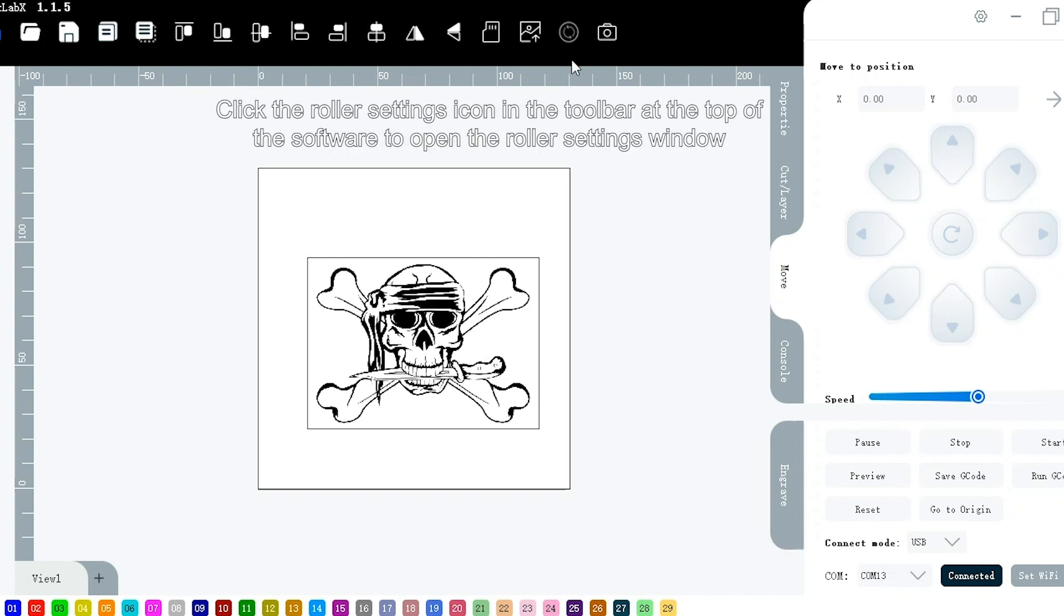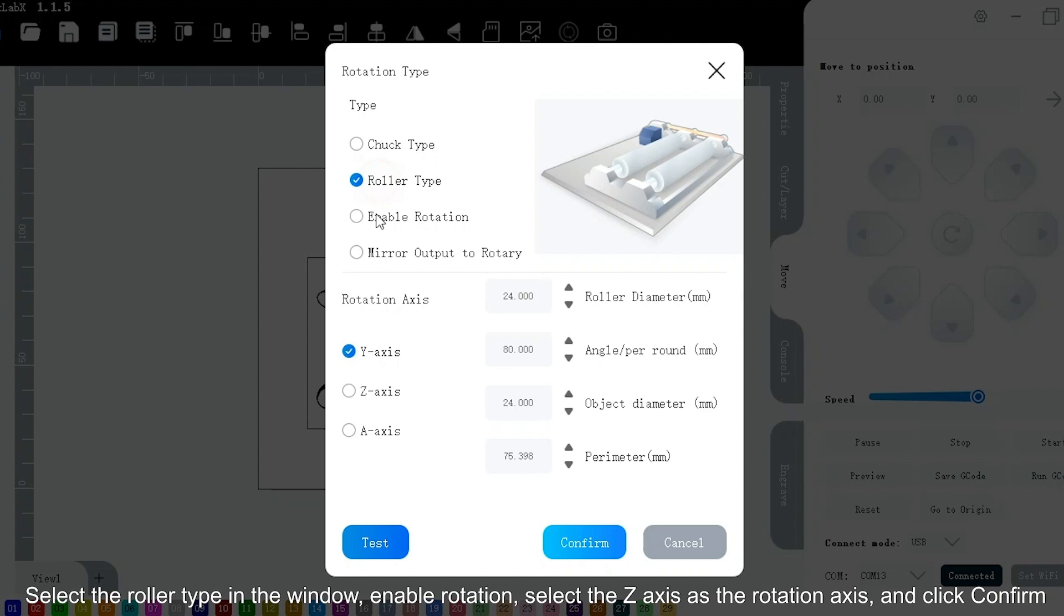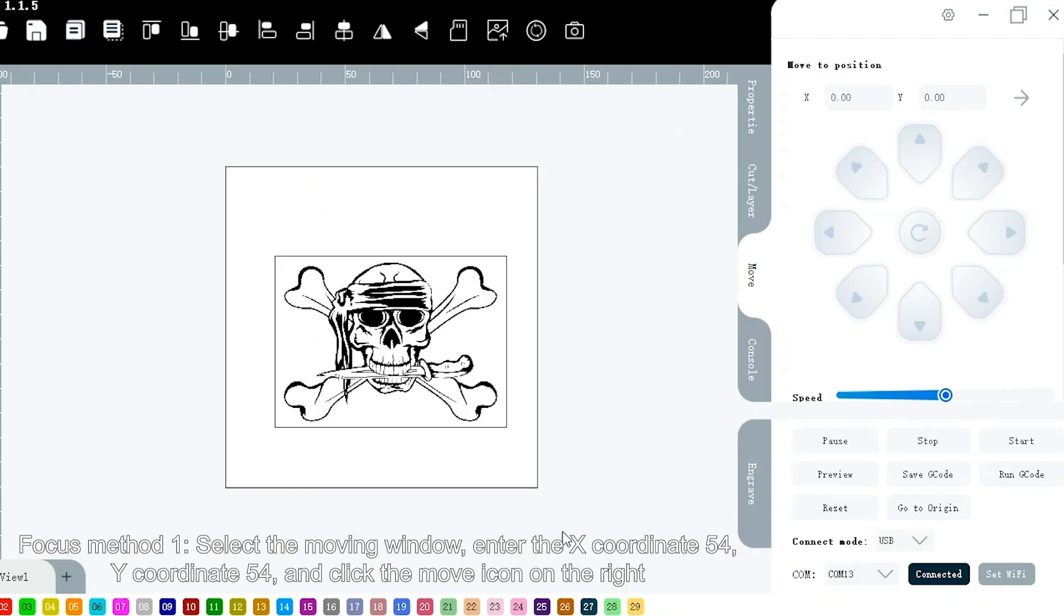Click the roller settings icon in the toolbar at the top of the software to open the roller settings window. Select the roller type in the window, enable rotation, select the Z axis as the rotation axis and click confirm.